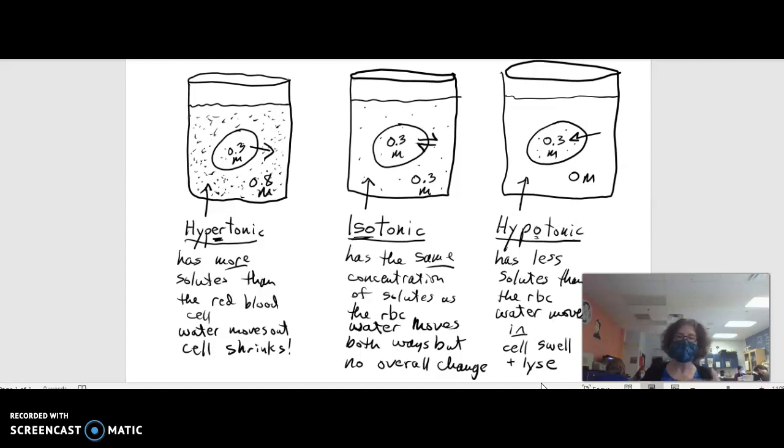So that's the three tonicities, and that's the consequences on water flow and cell shape. Also remember that if these were plant cells, the story would be slightly different. But I'll tell that maybe on another day. Thank you for listening.